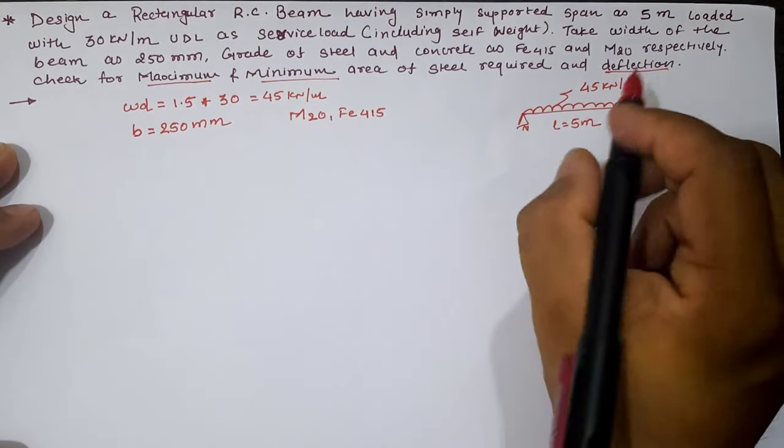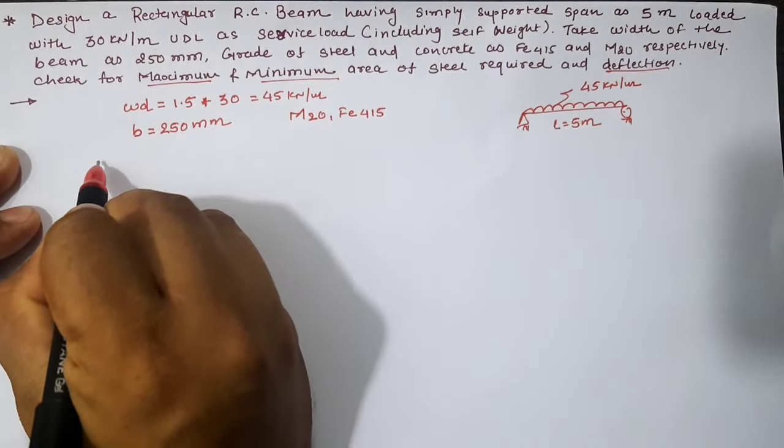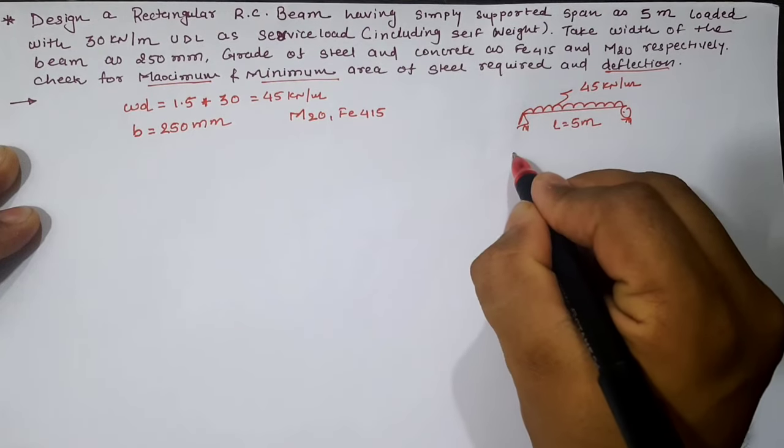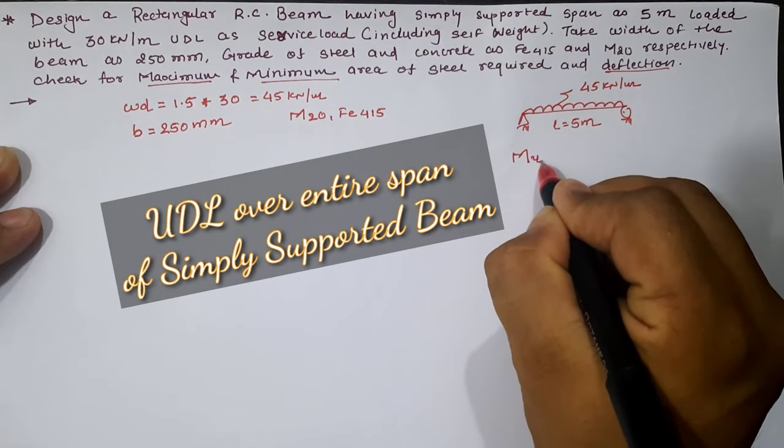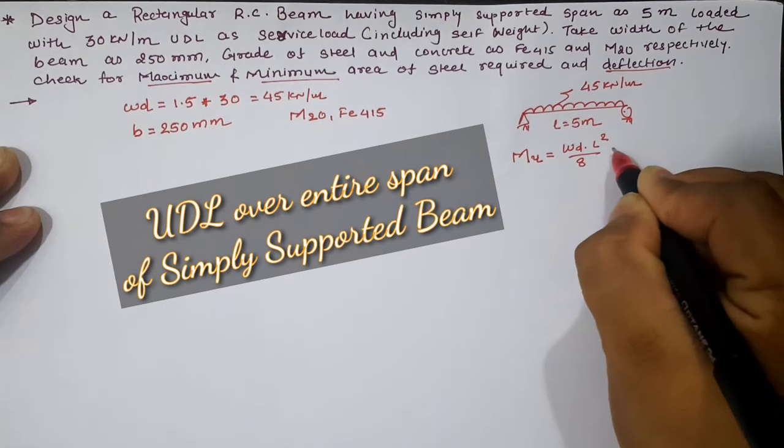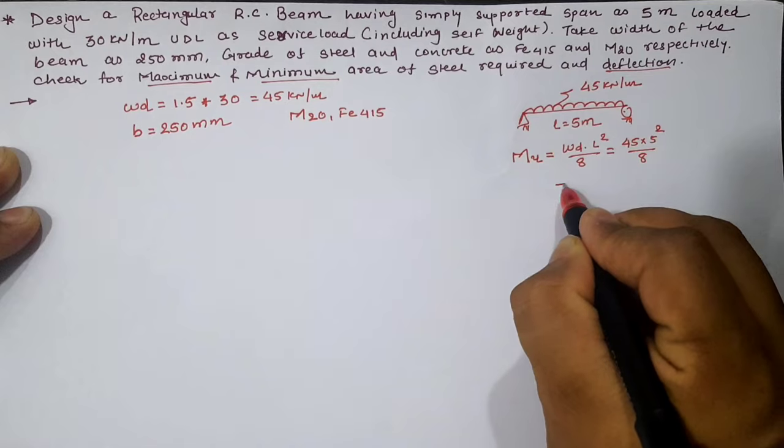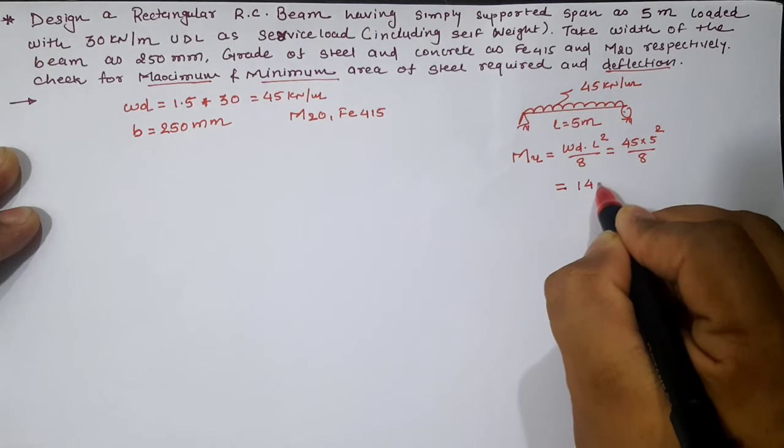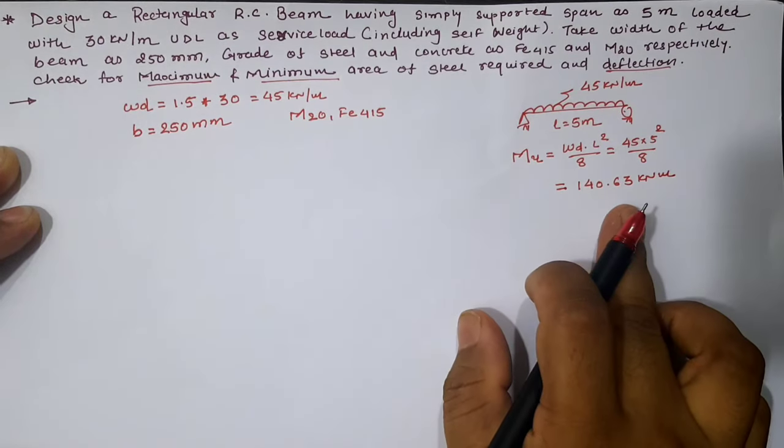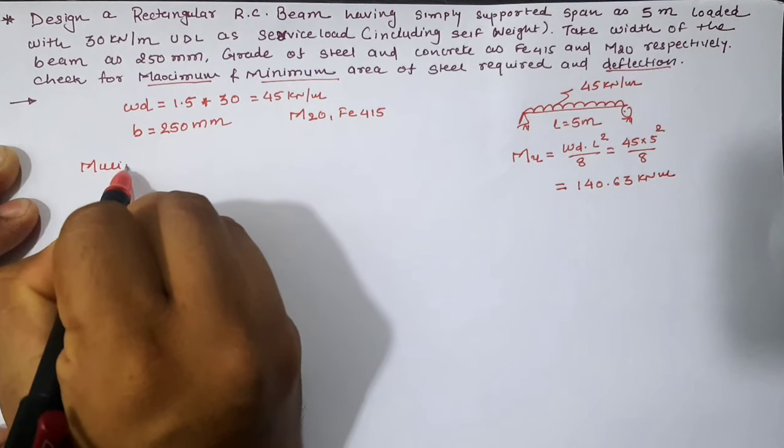We have to calculate maximum and minimum area of steel required as well as the deflection of the beam. First of all, the maximum moment that can be carried by the beam is Mu = wL²/8 = 140.63 kN·m.